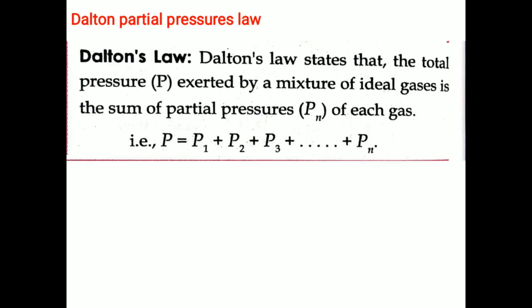Dalton's partial pressure law: the total pressure exerted by a mixture of ideal gases is the sum of partial pressures of each gas. That is, P equals P1 plus P2 plus P3 and so on up to Pn, where P1, P2, P3 are pressures exerted by the first, second, and third gas respectively, and Pn is the pressure exerted by the nth gas.